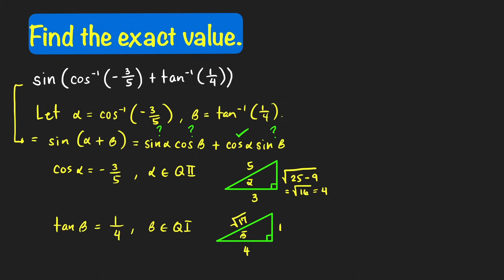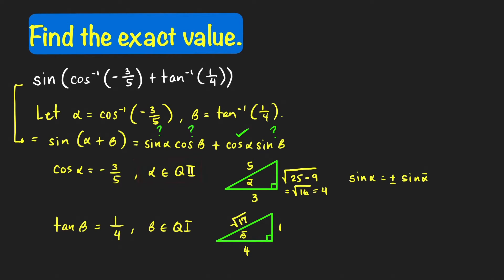Using this right triangle, sine(alpha) equals plus or minus sine(alpha-bar). Since alpha is in quadrant 2, sine is positive, so sine(alpha) = positive sine(alpha-bar) = opposite over hypotenuse = 4 over 5.